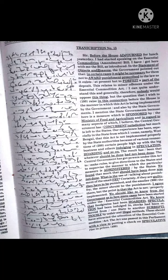This relates to minor offenses under the Essential Commodities Act. I can quite understand this, and therefore generally nobody would oppose this thing. But the question that I wish to raise before the House is the manner in which this act is being implemented by the government and also by the state governments. I mention the state governments because here is a measure which is sponsored by the Ministry of Food and Agriculture.